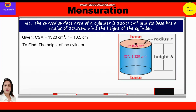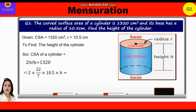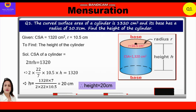We know that the curved surface area of a cylinder is equal to 2πRH, which equals 1320. Substituting the values: 2 × (22/7) × 10.5 × h = 1320. Cross-multiplying, height = (1320 × 7) / (2 × 22 × 10.5) = 20 cm. So the height of the cylinder is 20 cm.